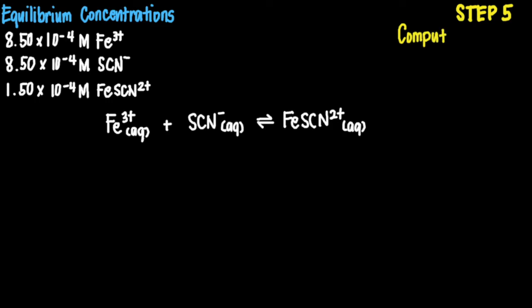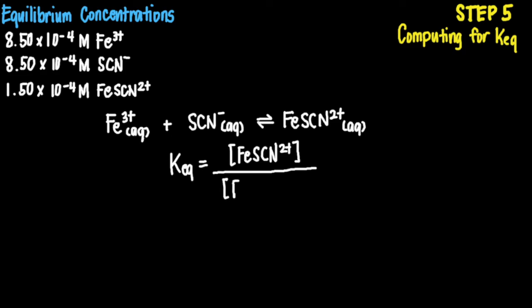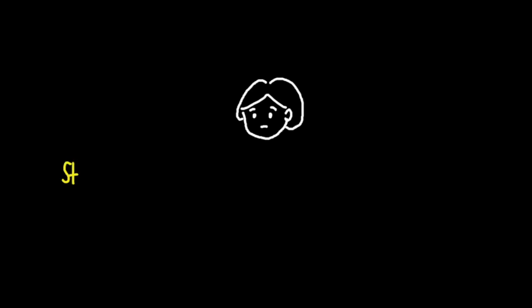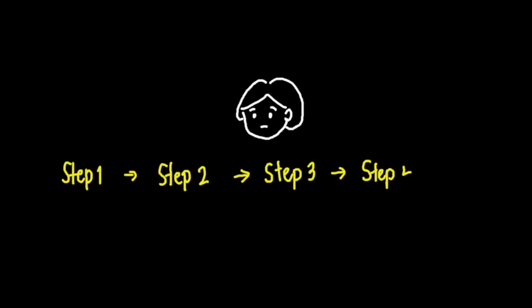For the final step, we plug the concentration values into our equilibrium constant expression. The equilibrium constant equals the concentration of the product iron-3-thiocyanate ion divided by the concentrations of the reactants iron-3-ion and thiocyanate ion. So we have 1.5×10⁻⁴ divided by (8.5×10⁻⁴ times 8.5×10⁻⁴), giving us a value of 208. With mastery of these steps and understanding of the rationale for each step, you can master the equilibrium constant in no time.